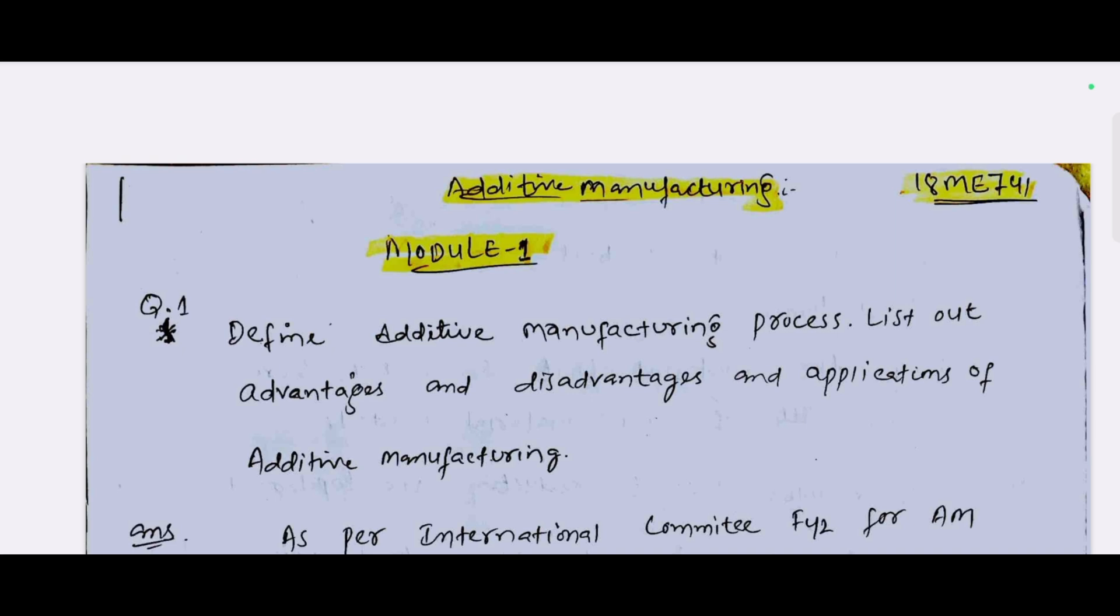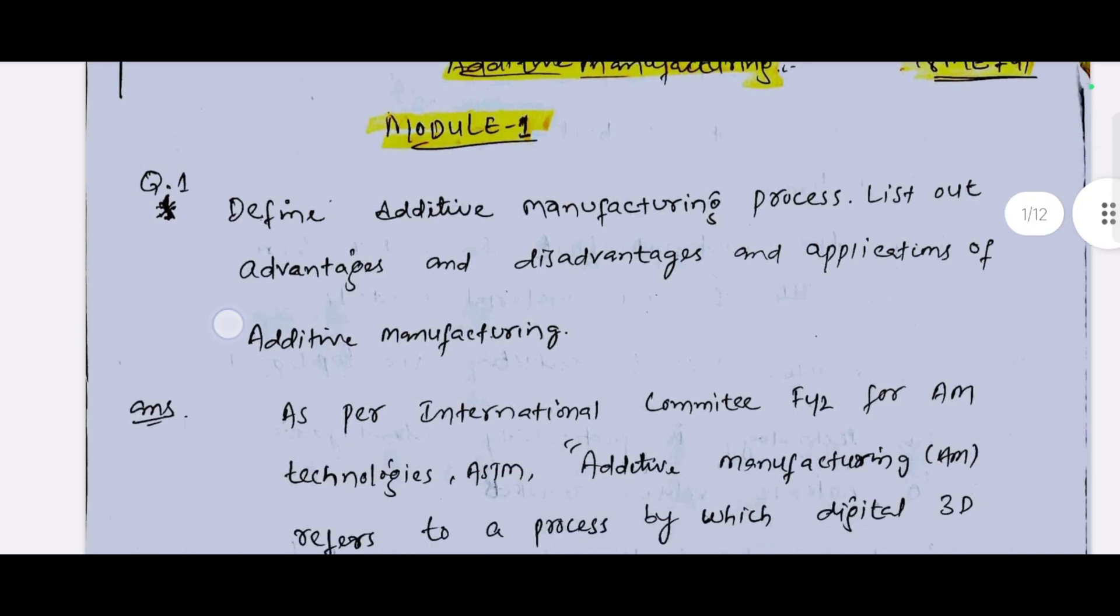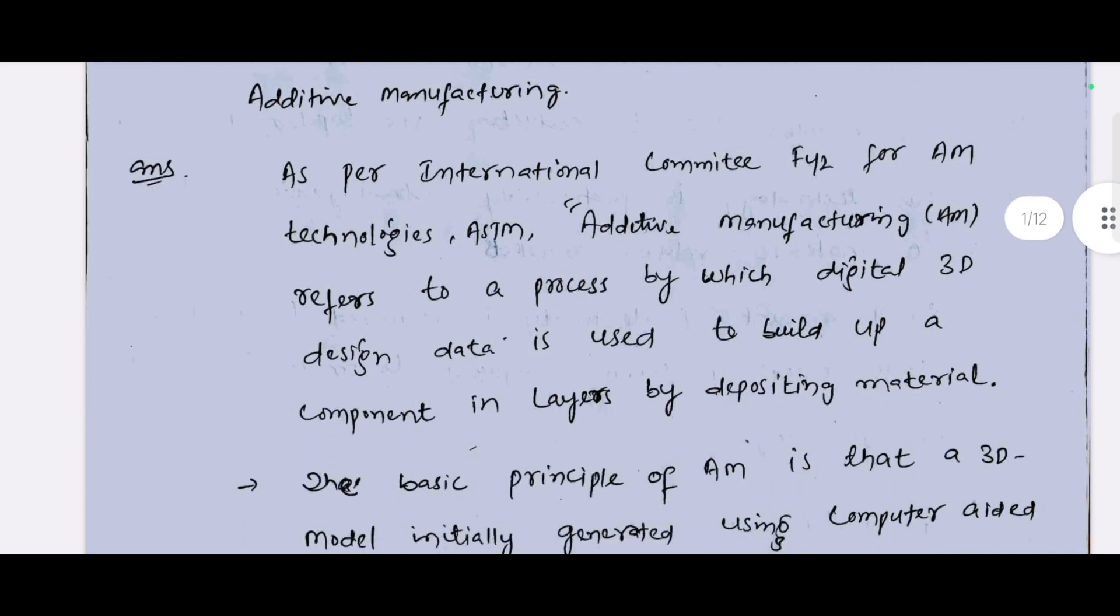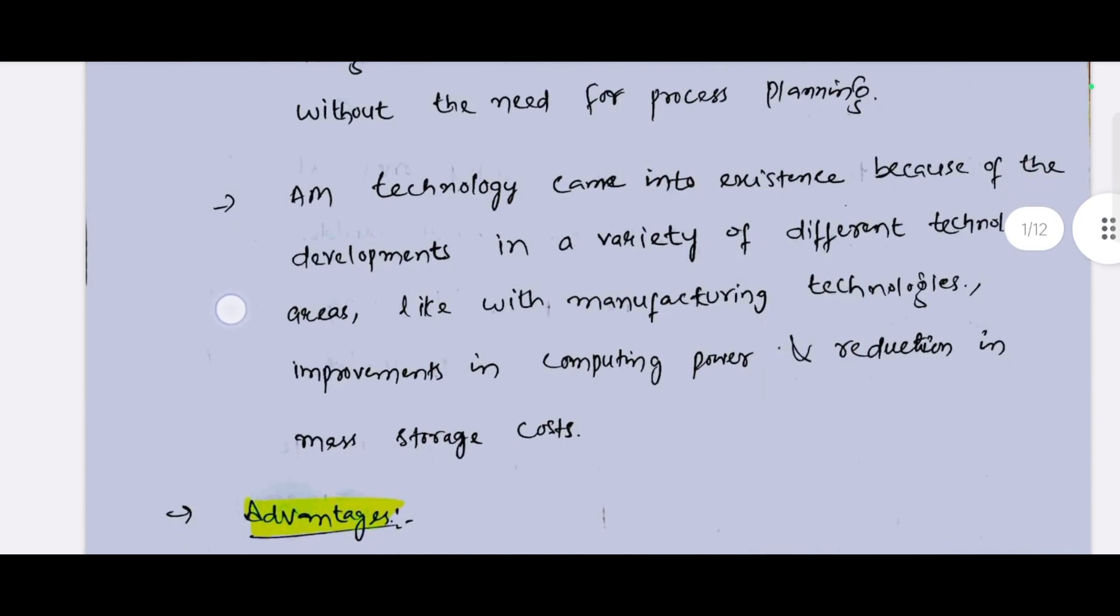Your subject code is 21ME731. In 18 scheme it was 18ME741. The syllabus is almost the same, so make sure you will refer these handwritten notes. Whatever the questions are there, you should cover them as early as possible. This will surely help you in getting more than 80 marks score in this particular subject.